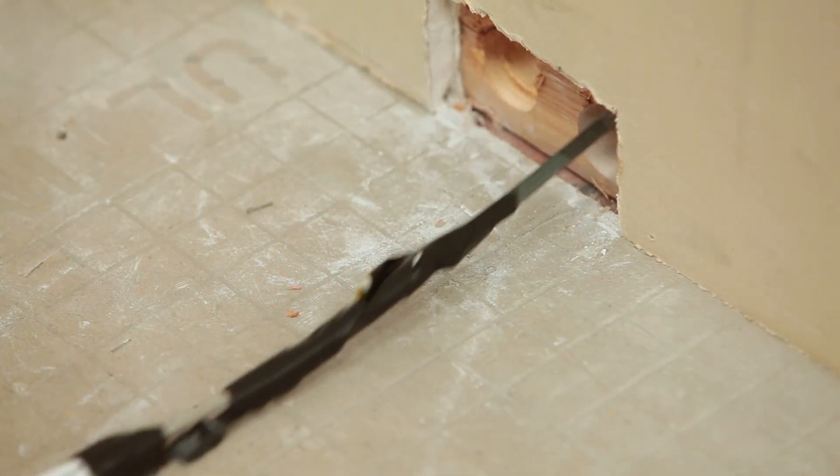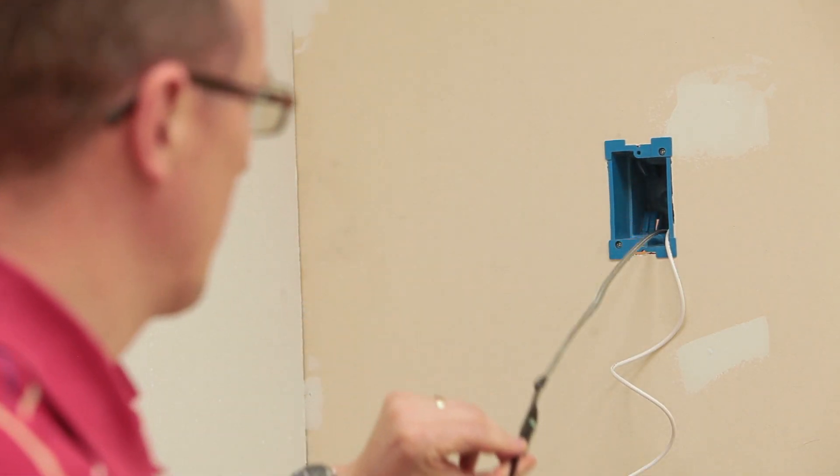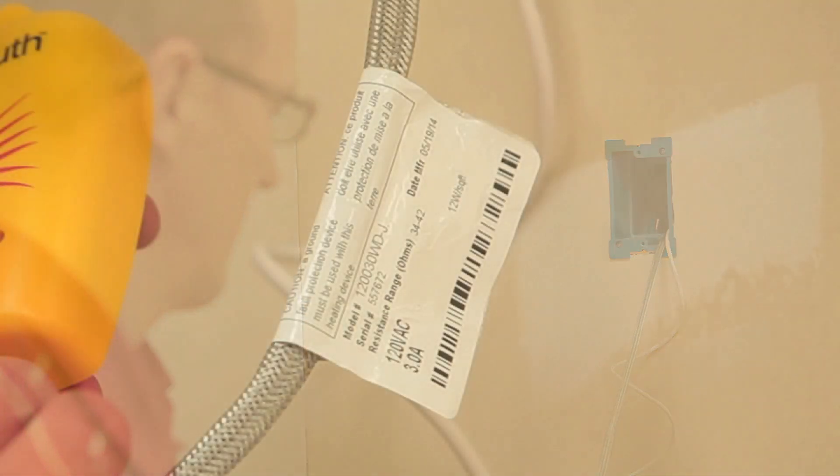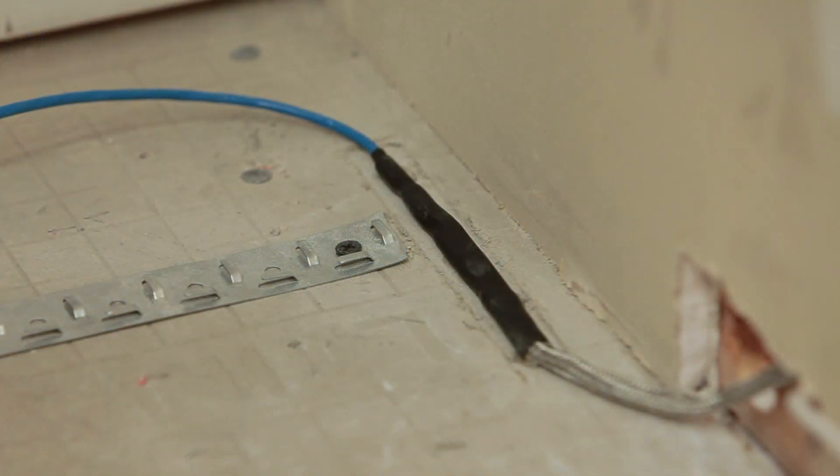Begin installing warm wire by feeding the power leads and sensor wire up to the control or junction box location. Do not remove the label attached to the lead. Take care not to pull the factory splice into the wall when pulling leads into the electrical box. This splice must be embedded in mortar and cannot be bent.